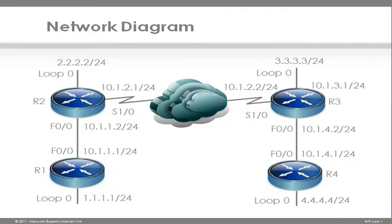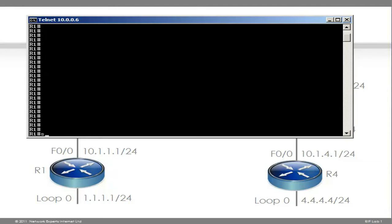This is the topology that we're going to use. We're going to configure four routers — router 1, router 2, router 3, and router 4 — to communicate using RIP. Each router has a loopback configured. The Fast Ethernet 0/0 interfaces will connect router 1 and 2 as well as router 3 and 4, and then a serial interface will connect router 2 to router 3.